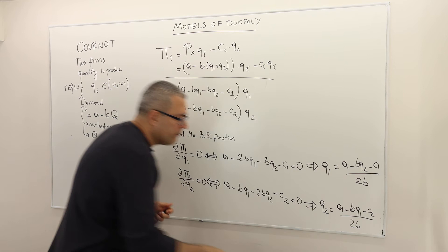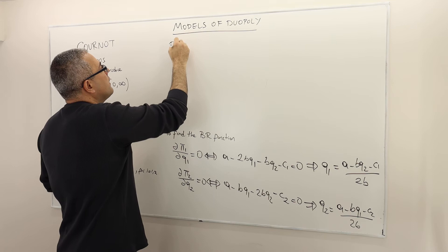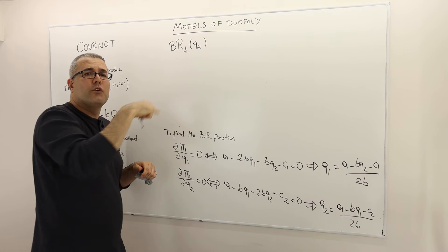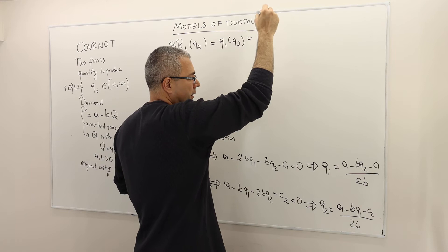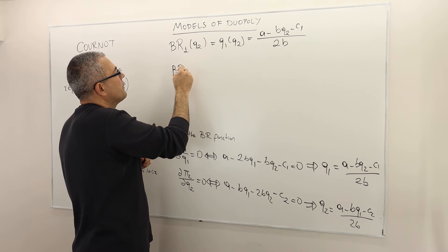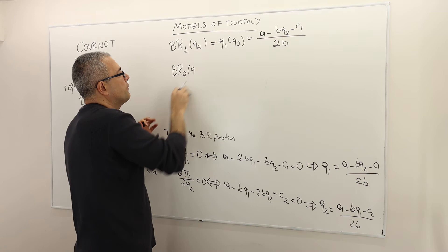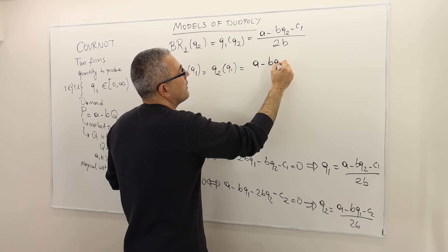We've found the best response functions. The best response function for firm one is: BR1(Q2) = (A minus BQ2 minus C1) divided by 2B. The best response function for firm two is: BR2(Q1) = (A minus BQ1 minus C2) divided by 2B.